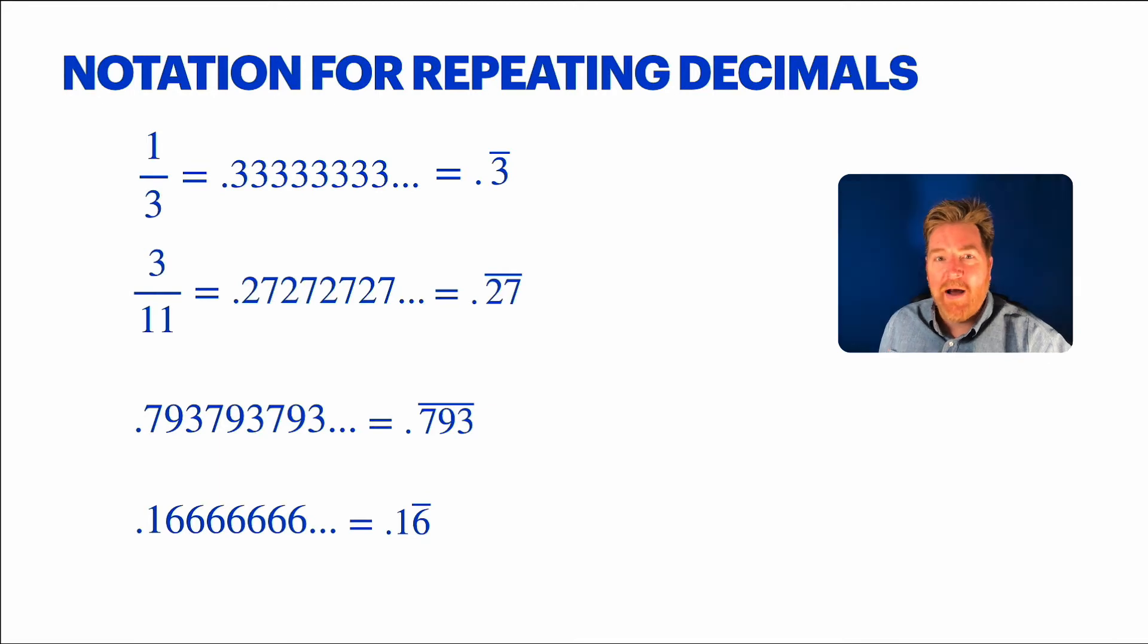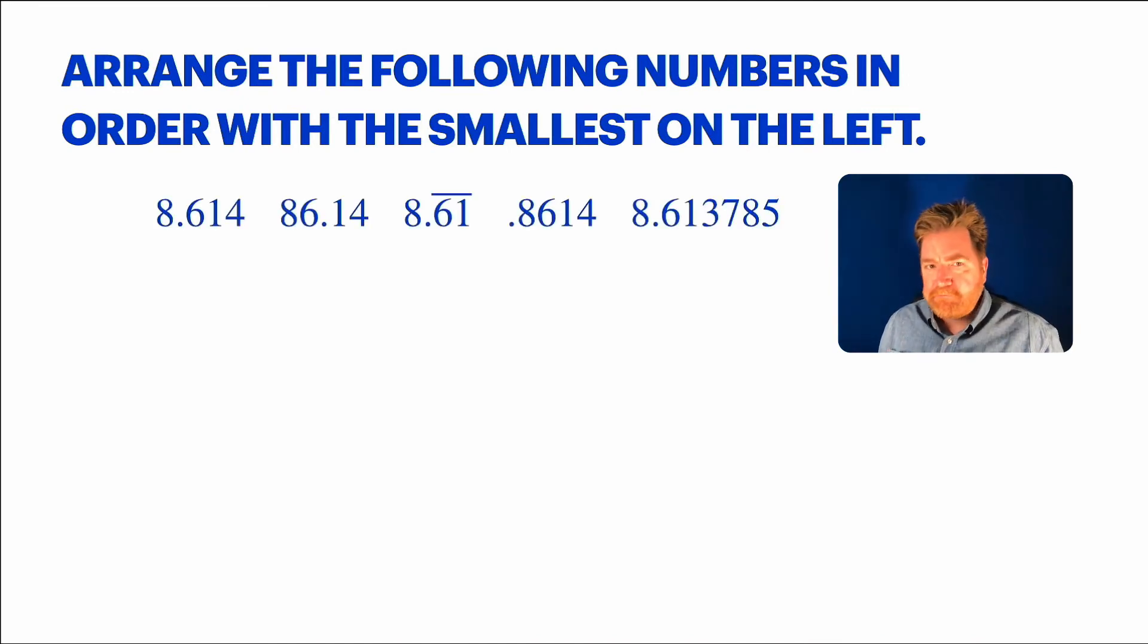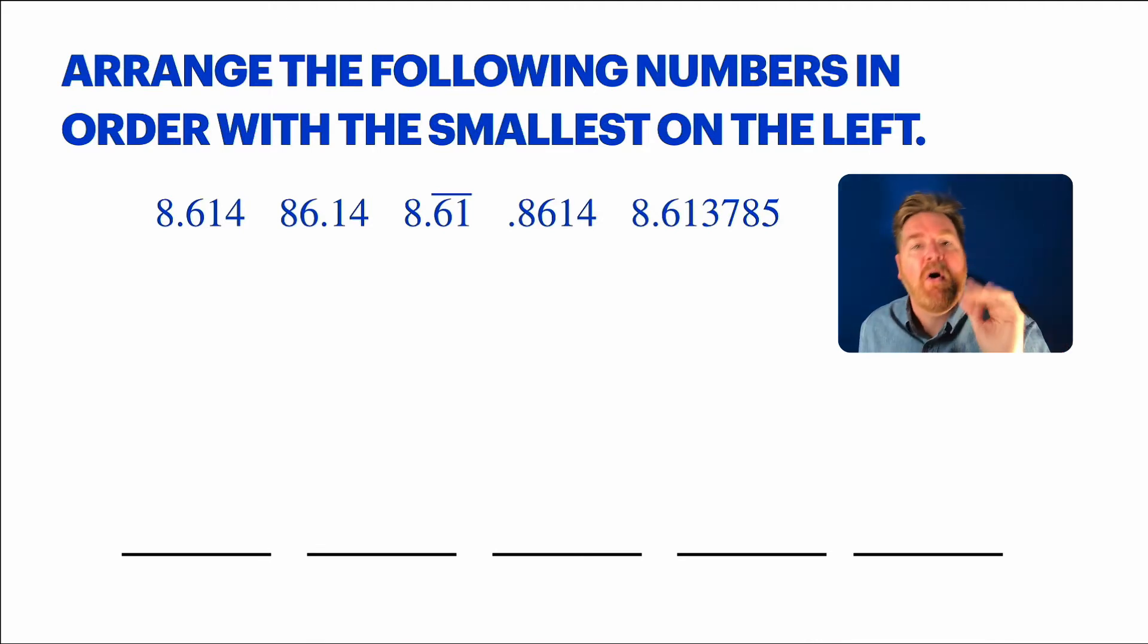These are pretty wild. Let's practice a little bit with this. Let's arrange these numbers, these five numbers, in order from smallest to largest, starting on the left. We got those five. So, we got five slots. Can you guys take a look through there? Just yell out. What's the clearest, the smallest one? What is clearly the smallest one?